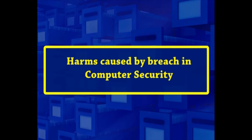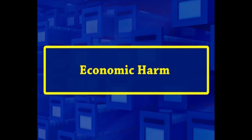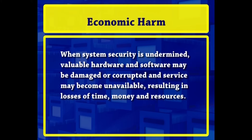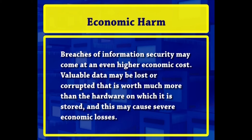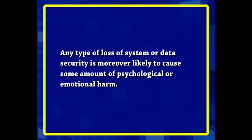A first and perhaps most obvious harm that can occur from breaches of computer security is economic harm. When system security is undermined, valuable hardware and software may be damaged or corrupted and service may become unavailable, resulting in losses of time, money and resources. Breaches of information security may come at an even higher economic cost — valuable data may be lost or corrupted, causing severe economic losses. Stored data may also have personal, cultural or social value. Any type of loss of system or data security is moreover likely to cause some amount of psychological or emotional harm.